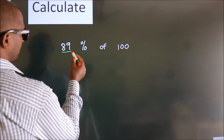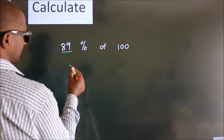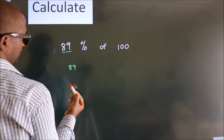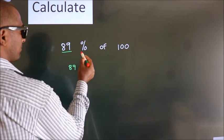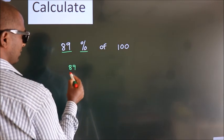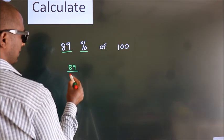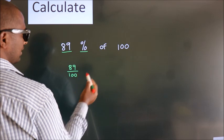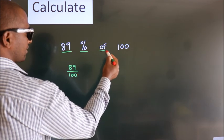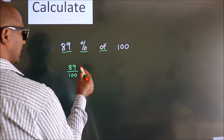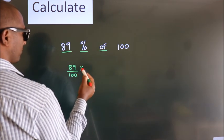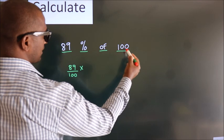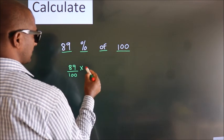This number as it is, we write it down. In place of percentage, we divide by 100. In place of 'of', we write multiply. This number as it is.